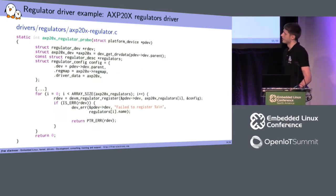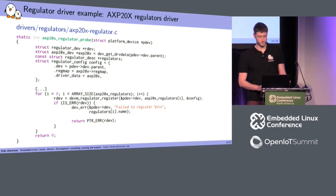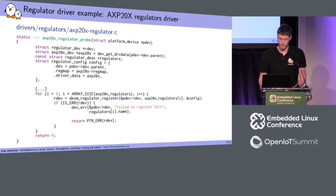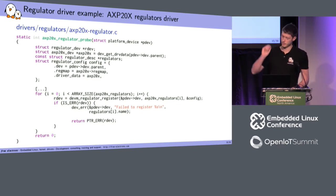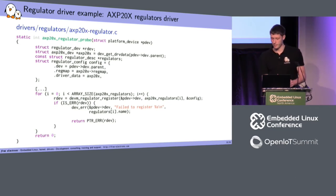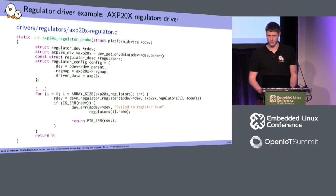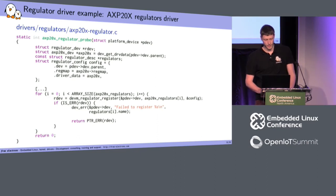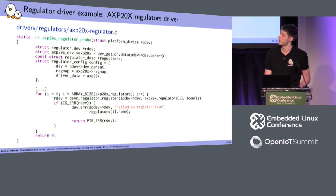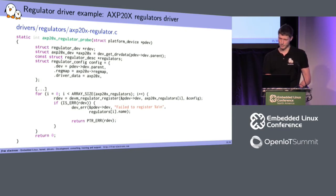Then you map things together to register in the subsystem. We use a regmap in the regulator config — it takes care of concurrent writes and reads on the same registers by different regulators so things don't get messed up. Then at the end we just register all the regulators in the regulator subsystem. That's a stripped example, but the main parts of the code remain.